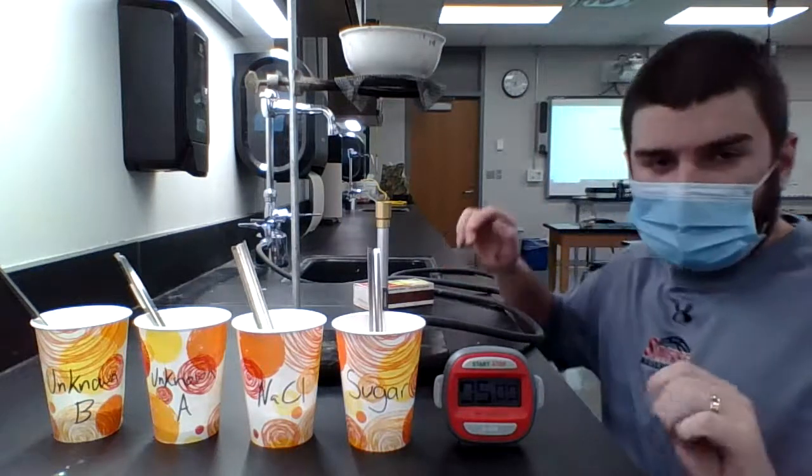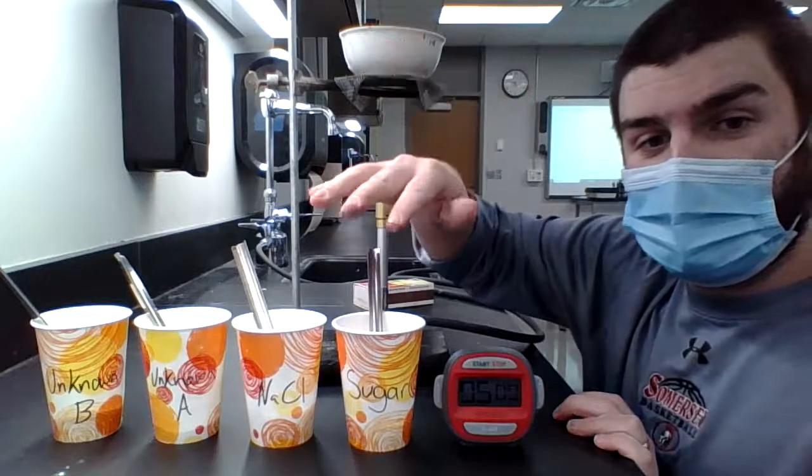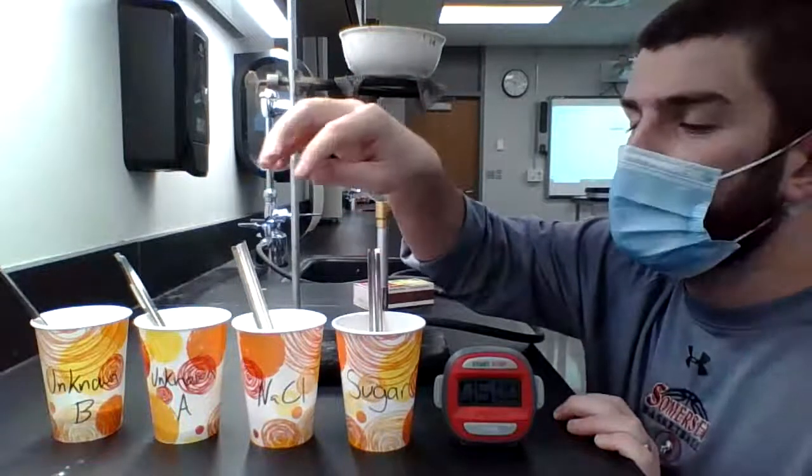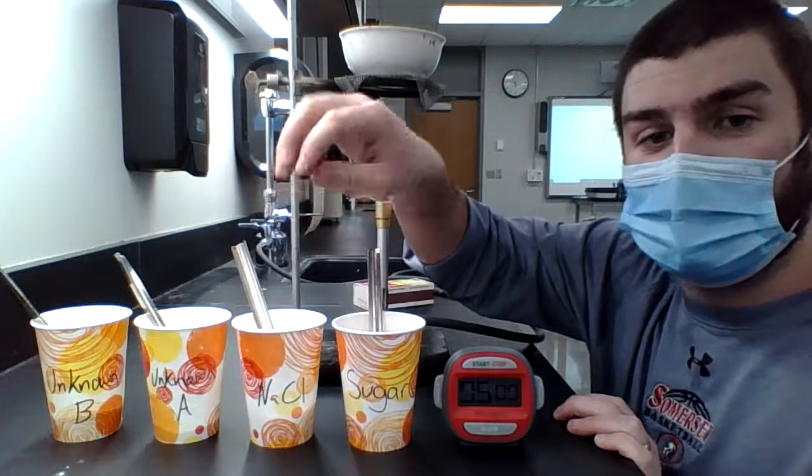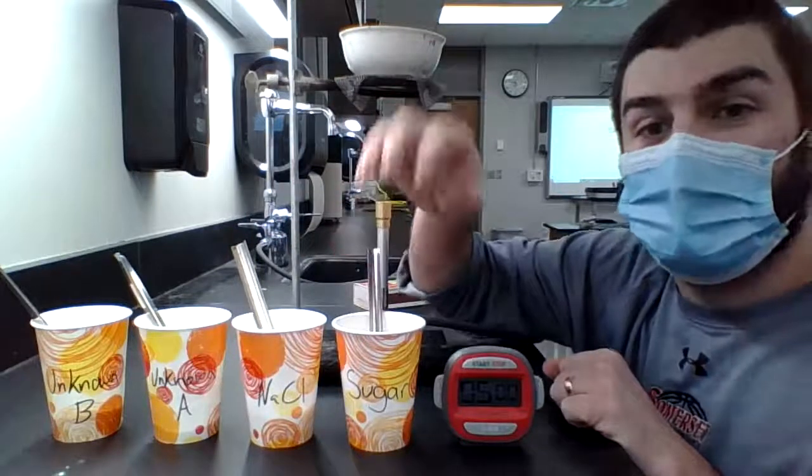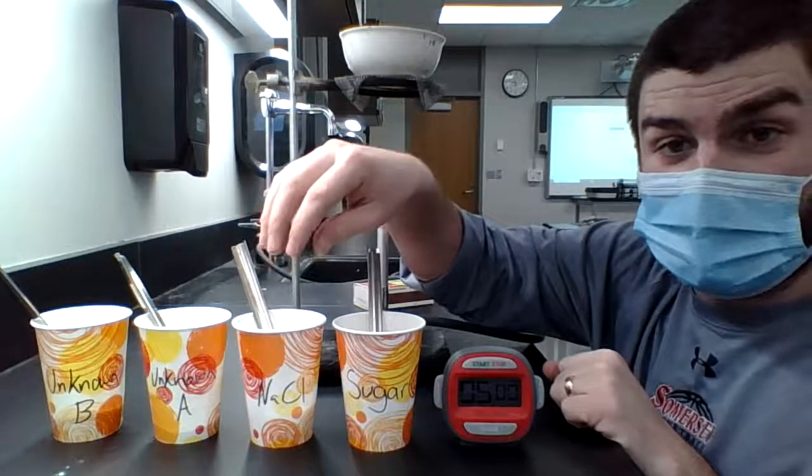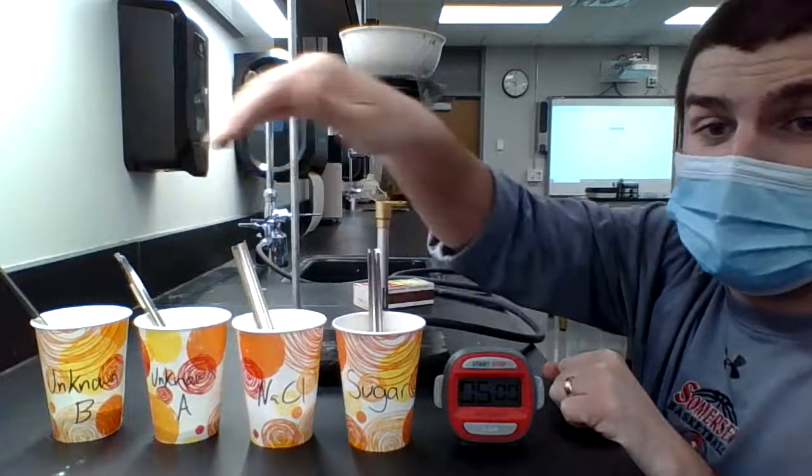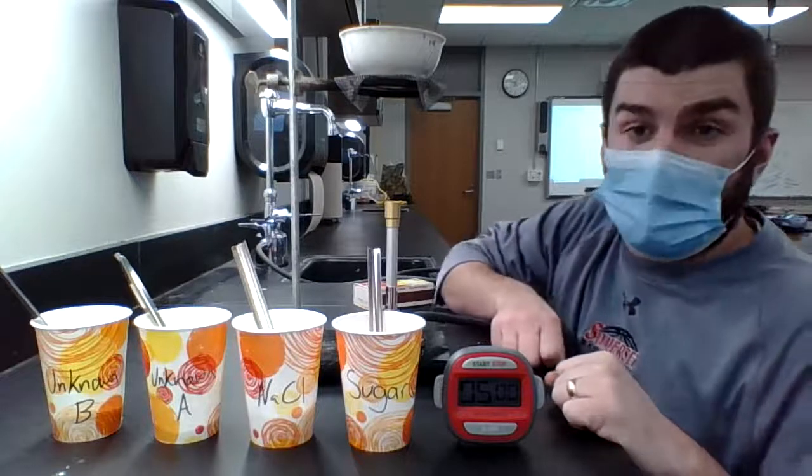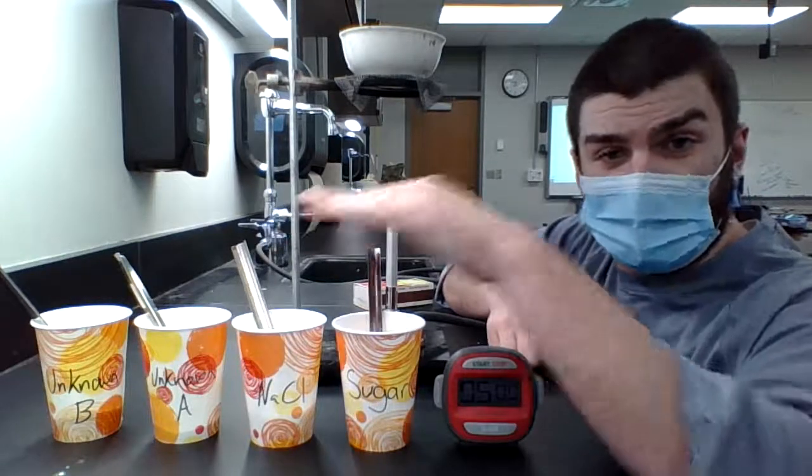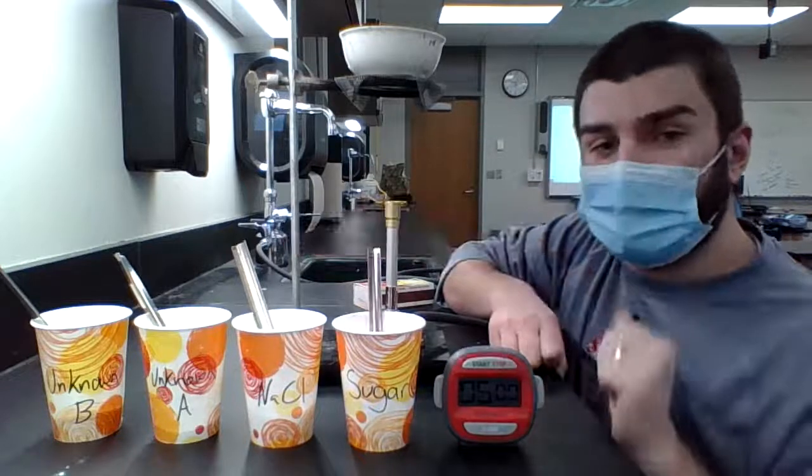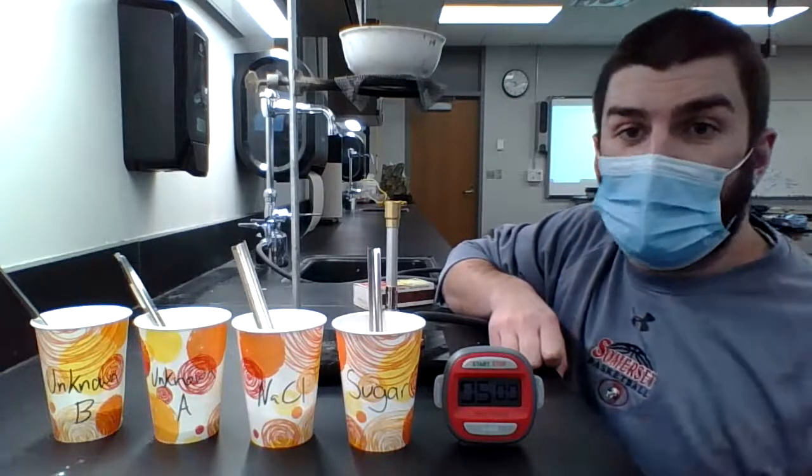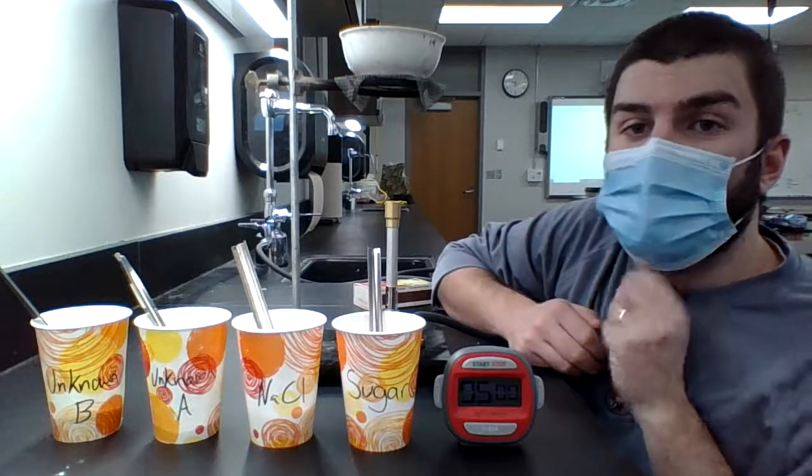So for this lab, you're going to need a timer. You need four substances. In this case, we have sugar, which is a covalent bond compound. You have NaCl, which is table salt, which is ionic, meaning it's a compound. And then we have an unknown A and an unknown B. We need to figure out what the strengths are, which one is stronger. So we need to first test sugar and salt, and then we will compare the results from these two to our unknowns to determine what type of bonds the unknowns have, whether they're covalent or whether they are ionic.